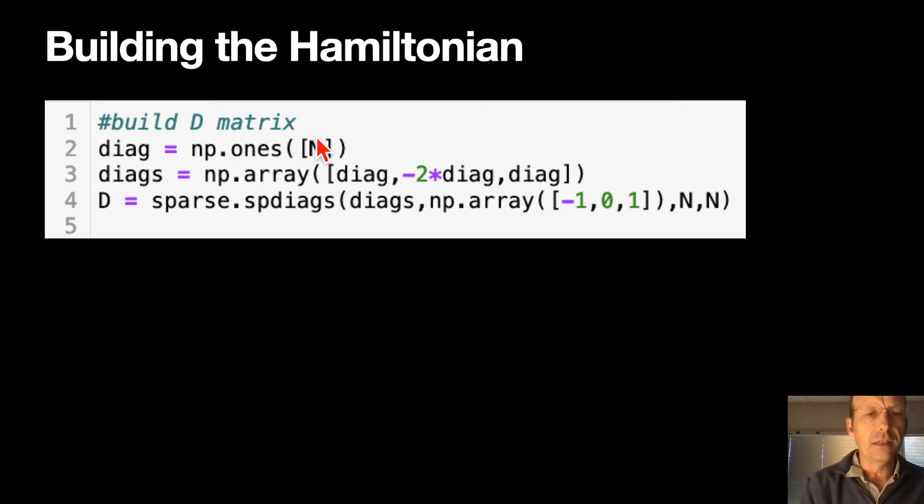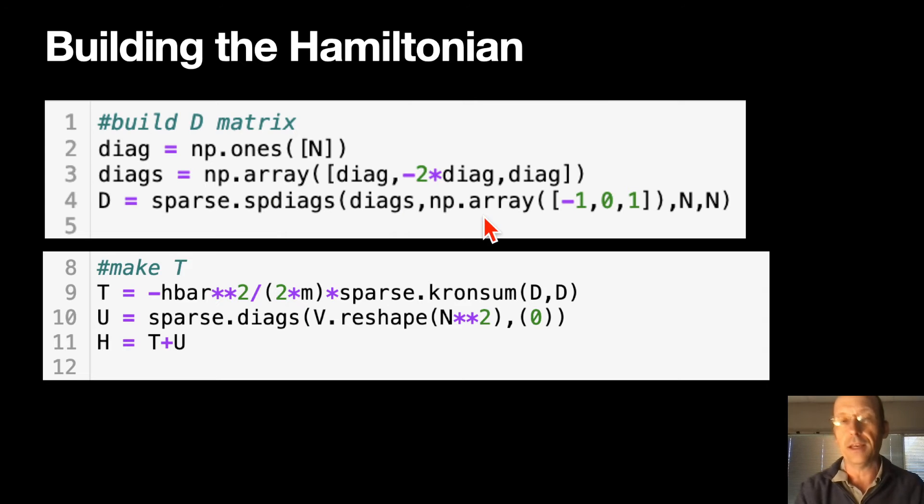So np.ones just makes a list of ones. This is one of my diagonals, because that's the one, negative two, one. That's what that's doing. That's that d. And then it's just a sparse thing with, I don't even know what I'm doing here. I'm just pretending like I know what I'm doing.